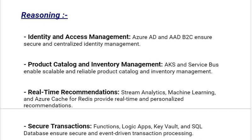Now moving towards the Reasoning section. Our first reasoning is Identity and Access Management: Azure AD and AAD B2C ensure secure and centralized identity management. Second reasoning: Product Catalog and Inventory Management — AKS and Service Bus enable scalable and reliable product management. Third reasoning: Real-time Recommendations — Stream Analytics, Machine Learning, and Azure Cache for Redis provide real-time and personalized recommendations.